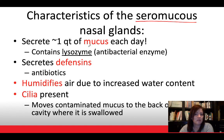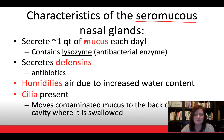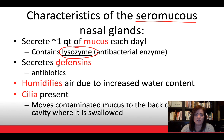In your nose you have seromucous glands. Interestingly, you secrete about a quart — four cups — of mucus each day. This mucus contains an enzyme called lysozyme, which is an antibacterial enzyme that helps rid the air you breathe of bacteria. It also secretes defensins, which are natural antibiotics that your body creates.